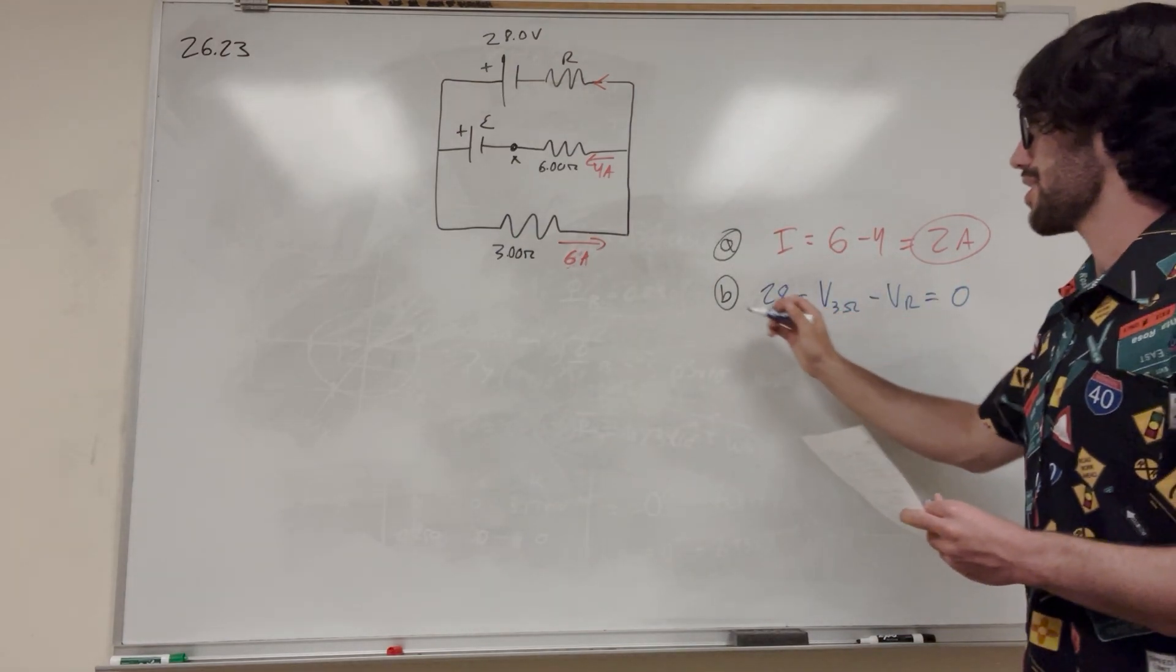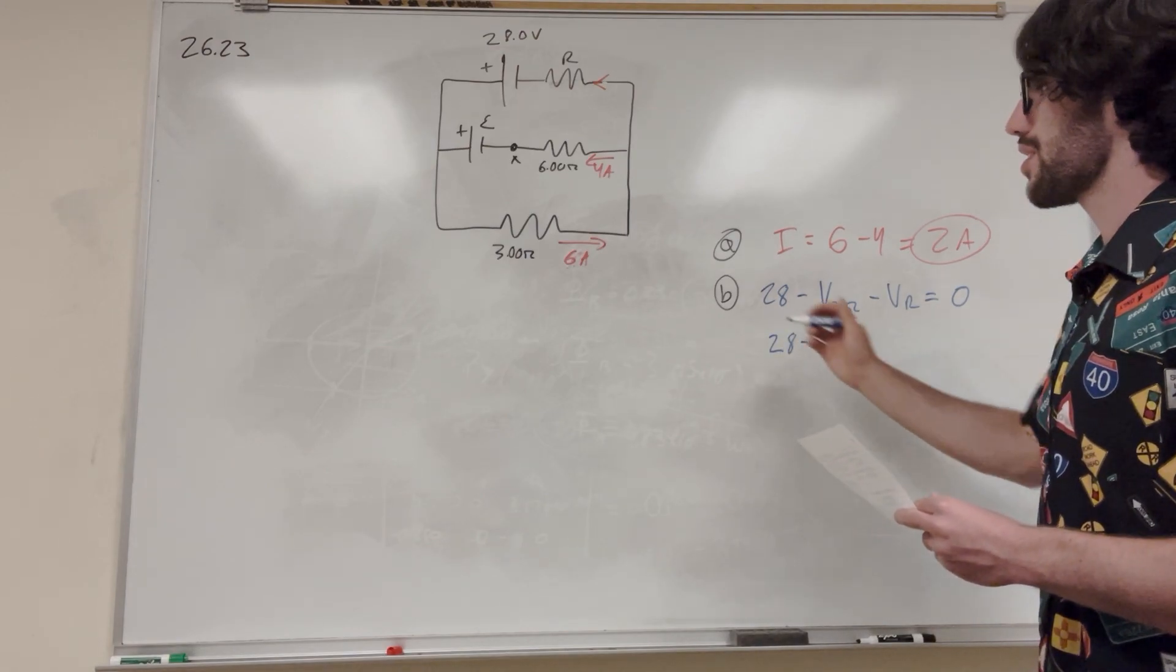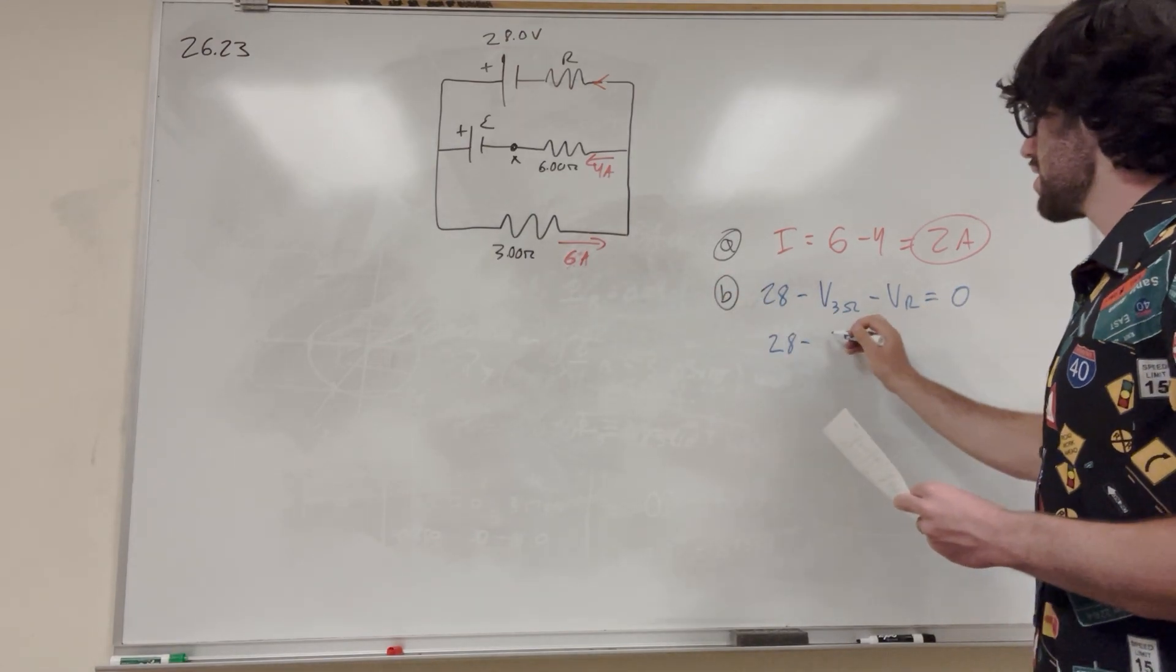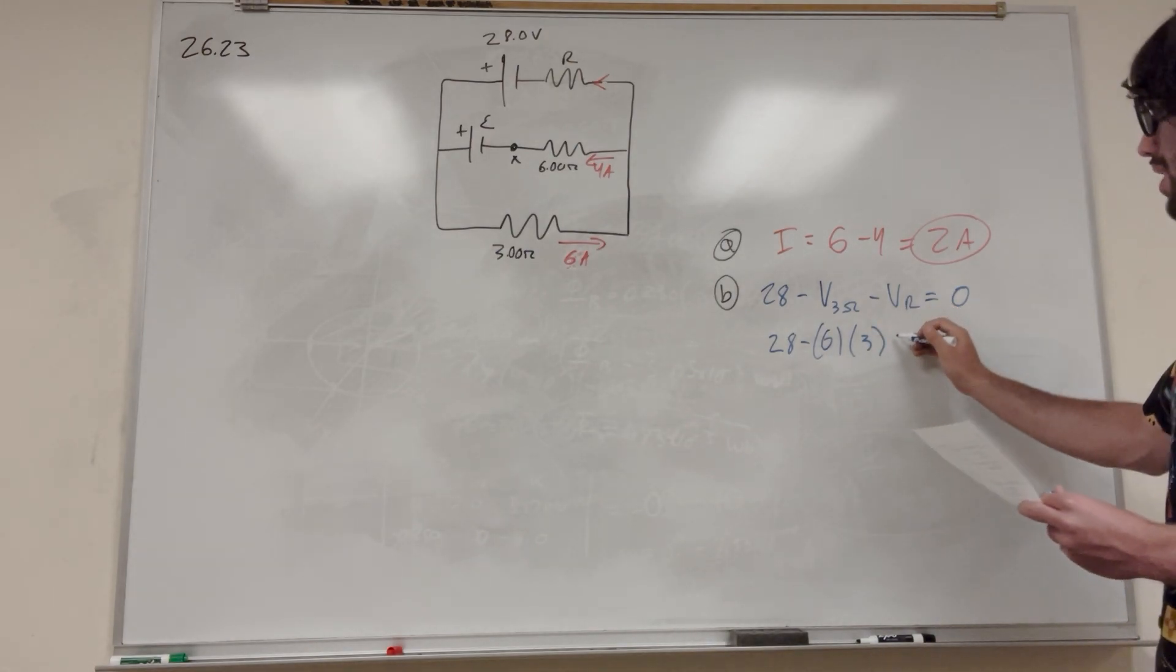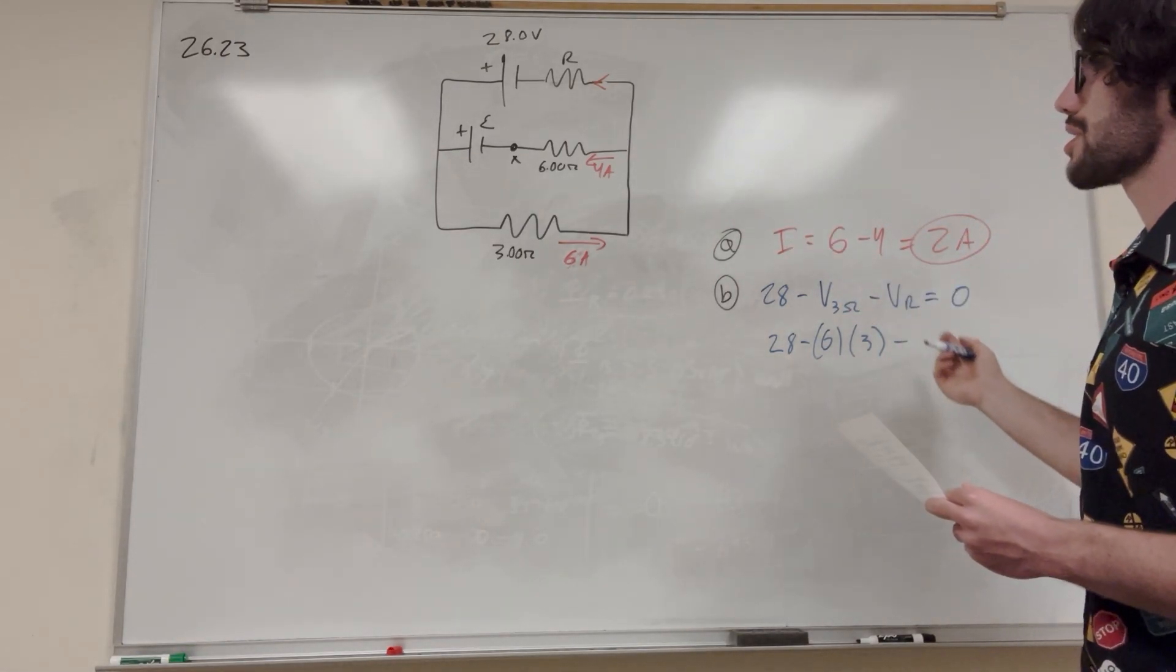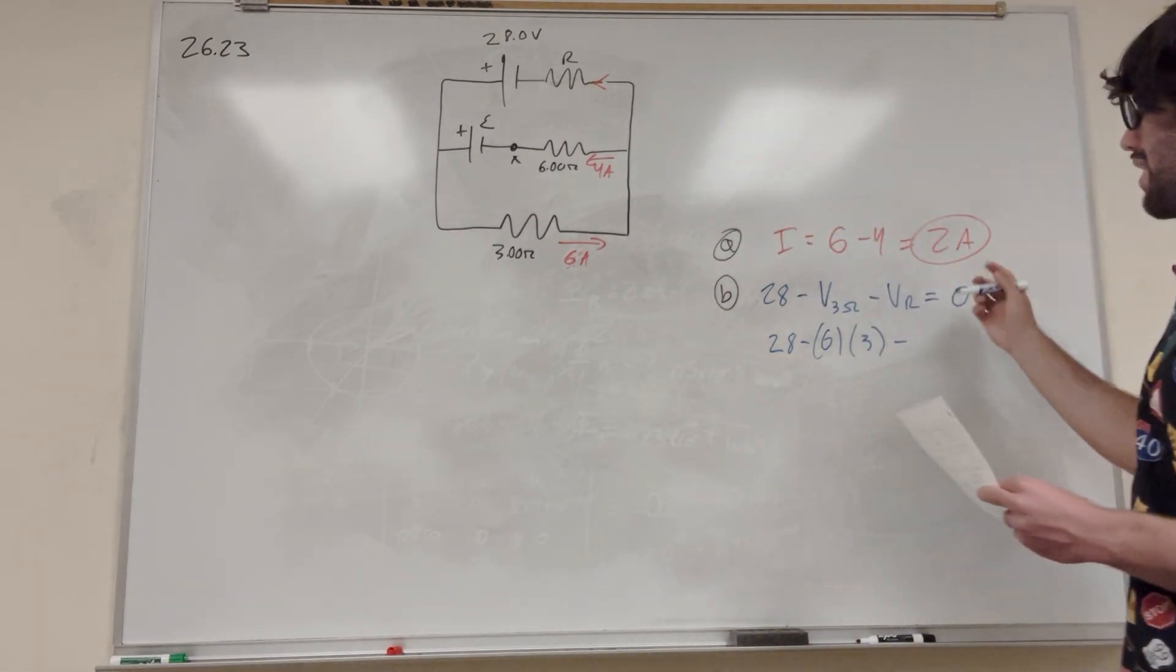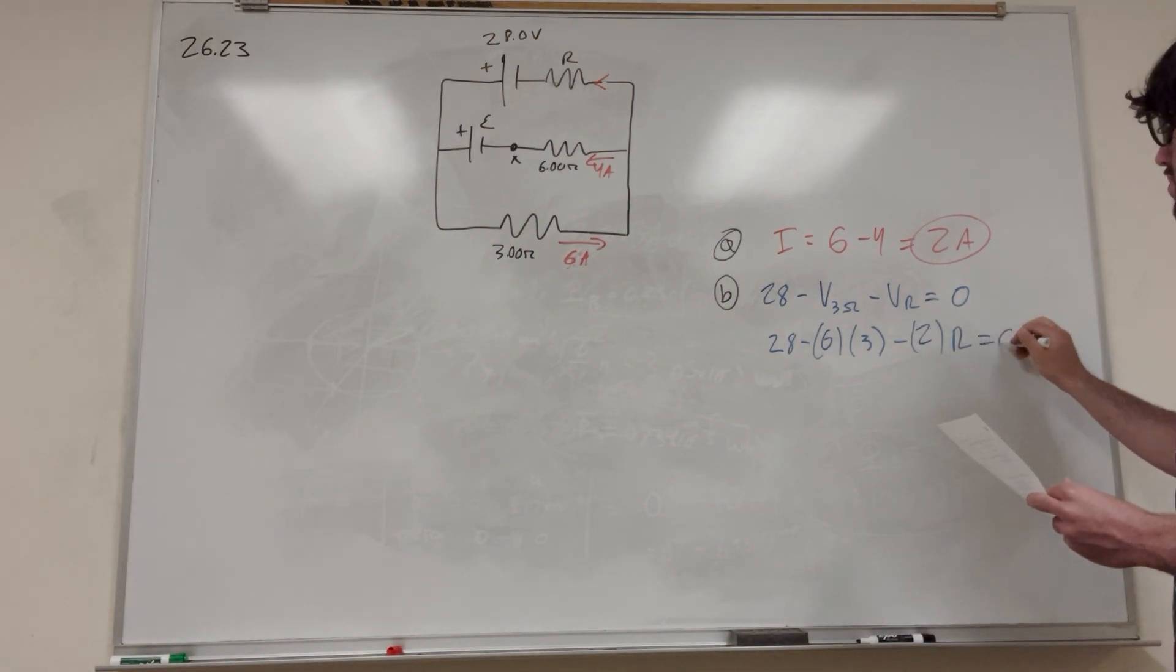So we know what this is, because V is equal to IR. We can say 28 minus IR, so I is 6 amps. Resistance is 3. And then we know that here, V is equal to IR. So we know that V is equal to IR. So we know the current here, like we found, is 2 amps, so 2. And then resistance, as we're trying to find, is equal to 0.